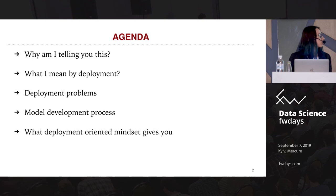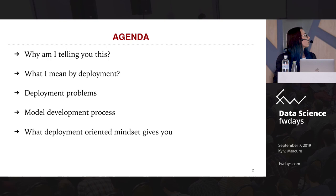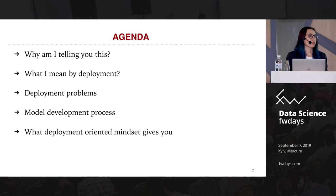The agenda of this talk can be divided into several parts. First, I'm going to tell you what deployment actually is and why you should care about that. Then I will tell you about some problems you can have during deployment if you haven't prepared for that ahead, about things you can do at each stage of the process of building machine learning models, and in the end, what this mindset gives you as a result.